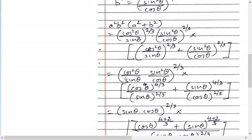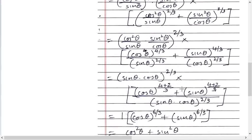Now we'll cross them. What happens? Cos theta raised to 4/3 and cos theta raised to 2/3, so it becomes cos theta raised to 4 plus 2 by 3, plus sine theta raised to 4 plus 2 by 3, the whole upon sine theta cos theta raised to 2/3.